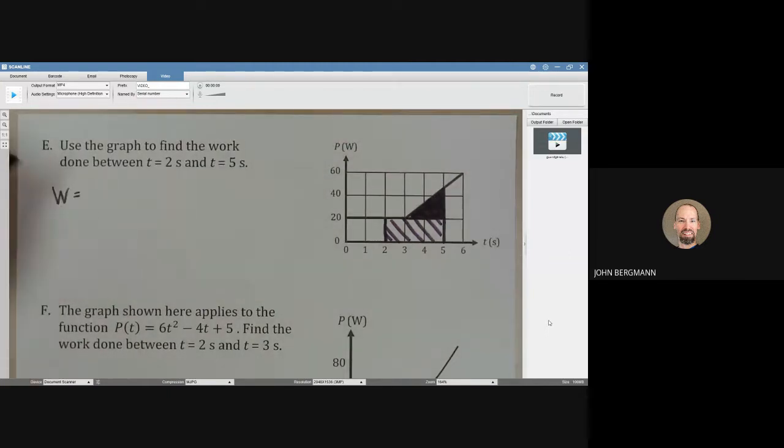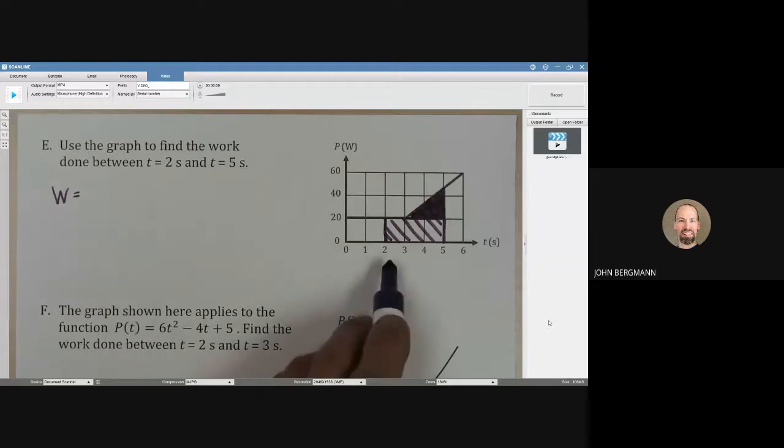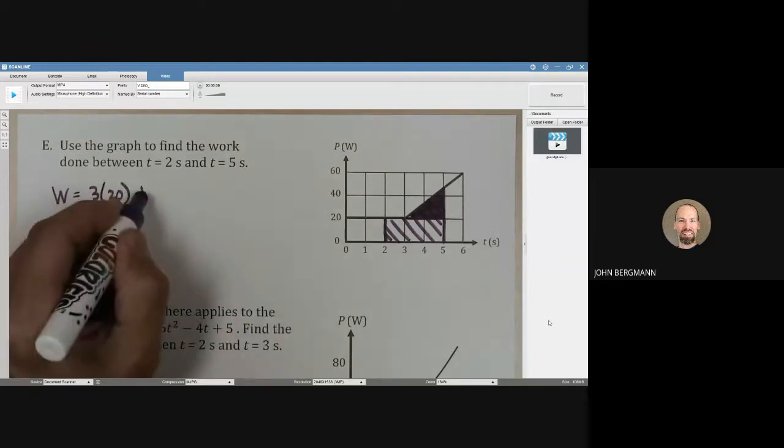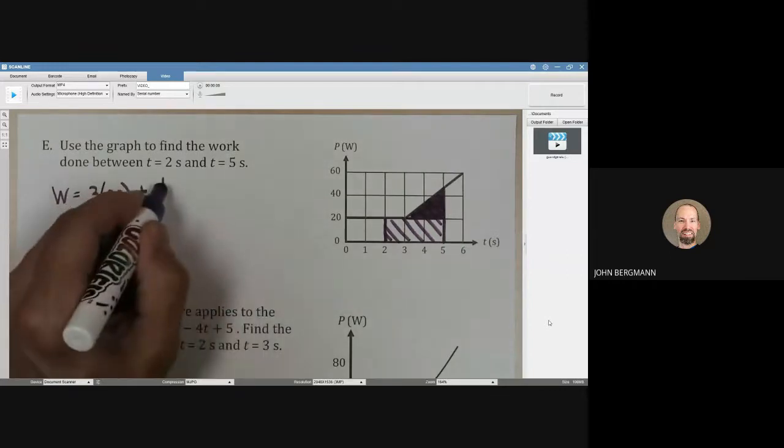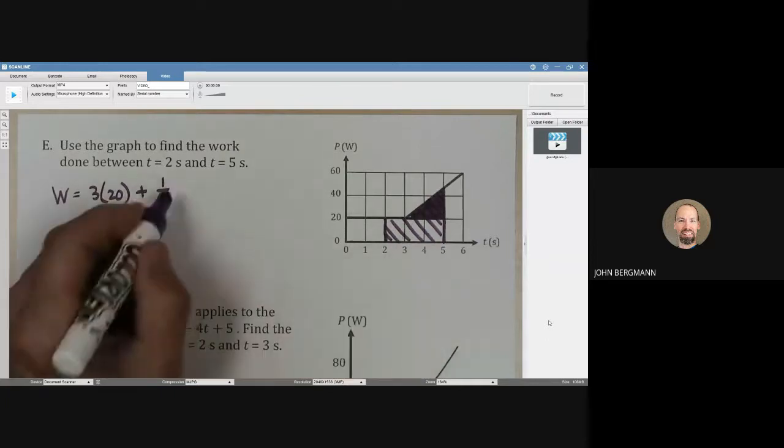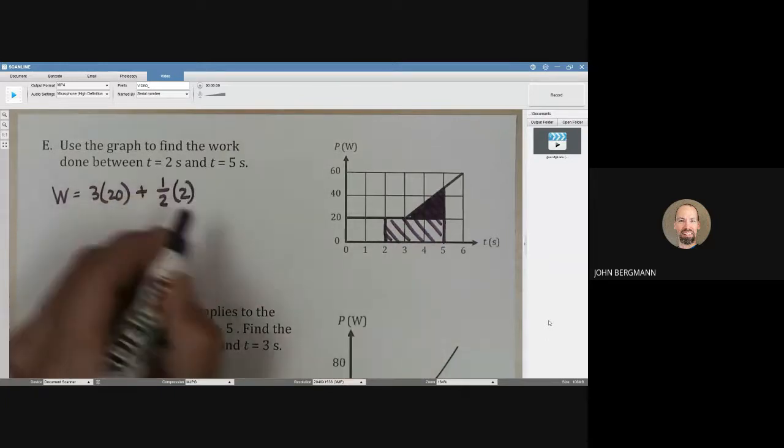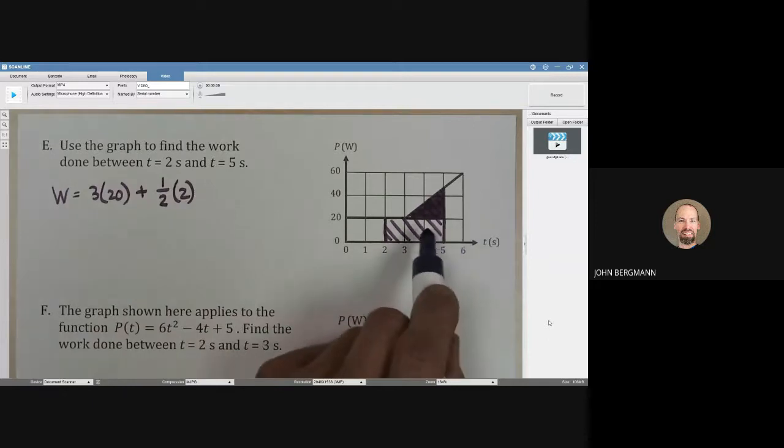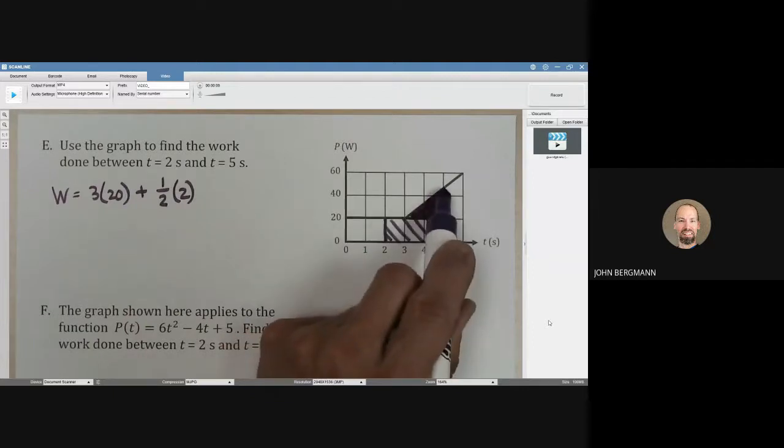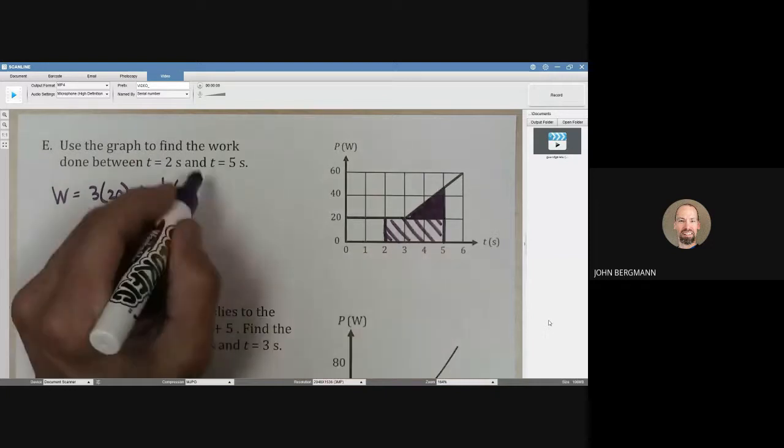The work done is going to be, let's do the rectangle first. That's going to be a width of 3 and a height of 20. And then how about the triangle? That's going to be 1 half times the base, which is 2. And what's this height? This height is going to be roughly 20, we're just approximating 27. It's not up to 50 yet, so that's going to be maybe 27.